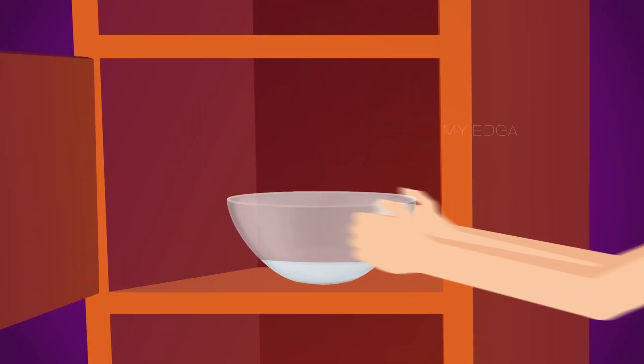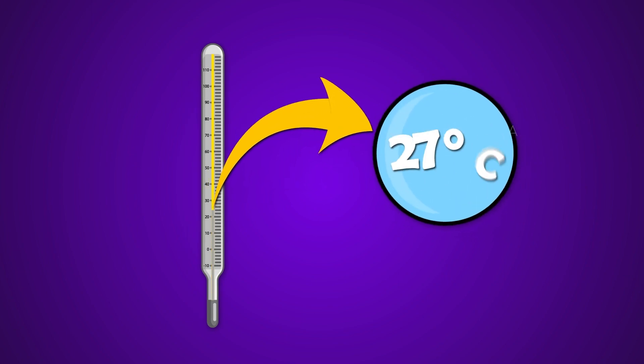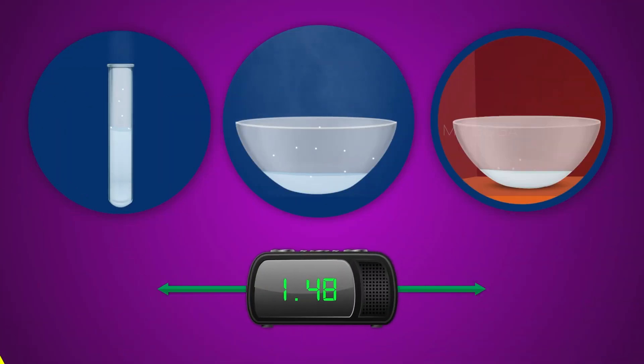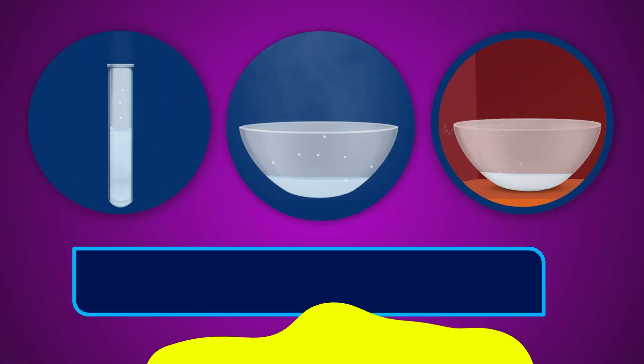At the same time, take 5 ml of water in another open china dish and keep it inside a cupboard. Record the room temperature while doing the activity. Observe the test tube and china dishes carefully and find the time or days taken for evaporation of water in all three situations.